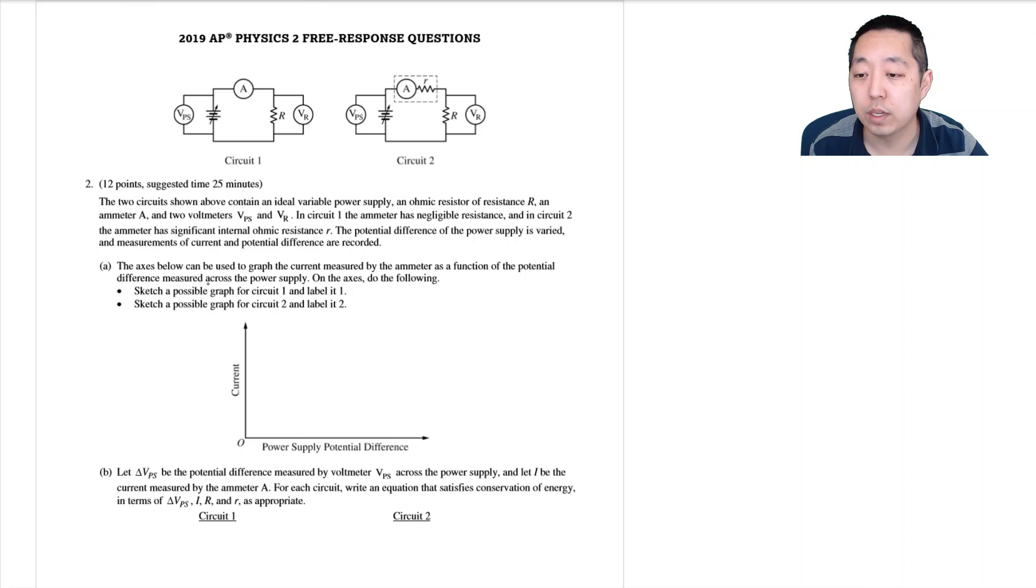On the axes below, sketch a possible graph of circuit one, label it one, and a possible graph of circuit two.